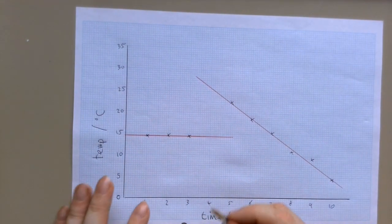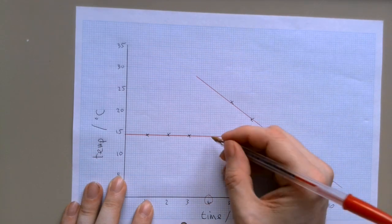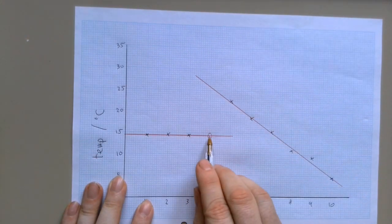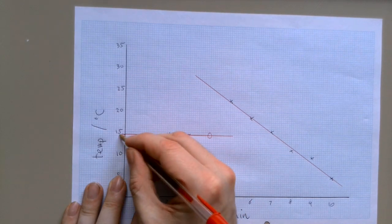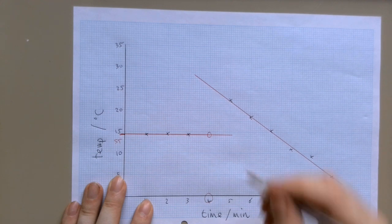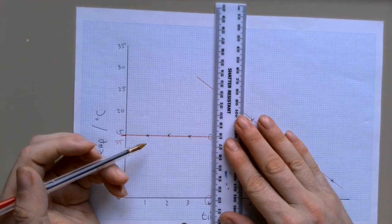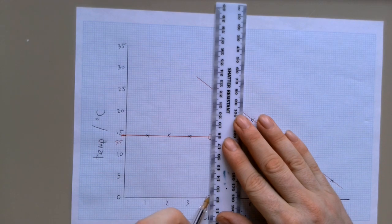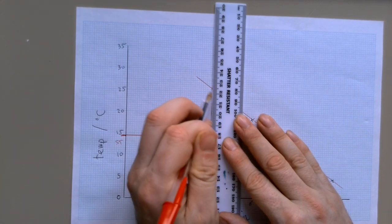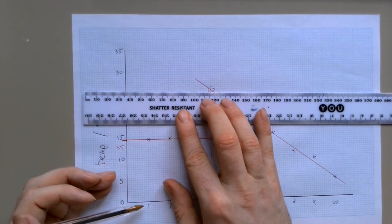Now, at four minutes, so this was the time when we added the chemical, we can see that this is our initial temperature. So I would read back on that line to that reading there. This is the start temperature. And if we go up, again use a ruler, wherever this second line is, that is our final temperature.